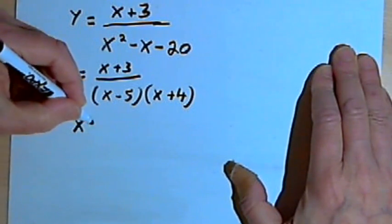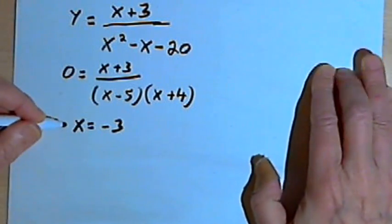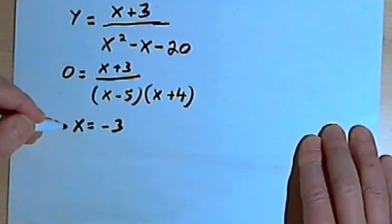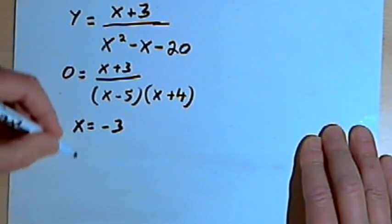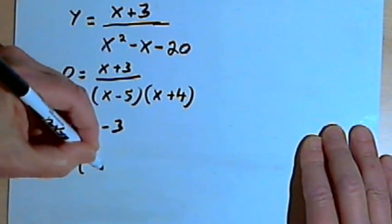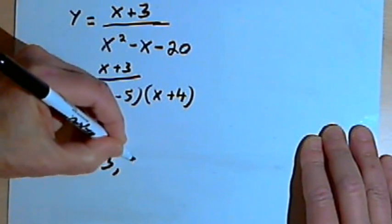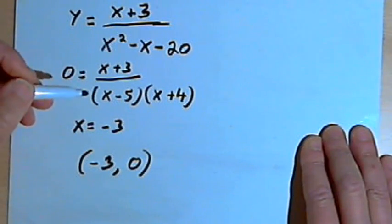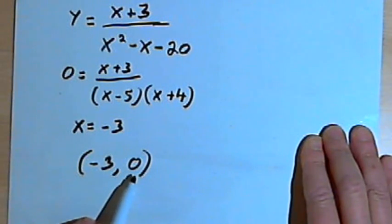So I've got x equals negative 3. That's going to be the x-value for my x-intercept. The point of that intercept is going to be negative 3 comma 0 for my y-value, because x-intercepts occur whenever y equals 0. Let's do one more.